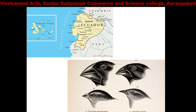A classical example of speciation involving the radiation at the species level, studied by Darwin, is called speciation or divergence. You can see that the size and characteristics of the species are different from one another.